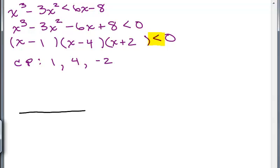So when I draw my number line and put these numbers, negative two, one, and four, these are not solutions so you're going to put a circle as opposed to a dot. Now this breaks up the graph into four regions: numbers less than negative two, in between negative two and one, in between one and four, and greater than four.